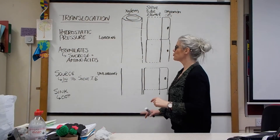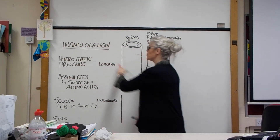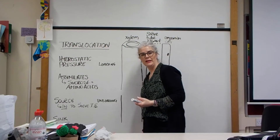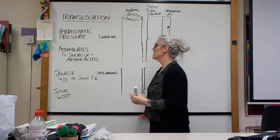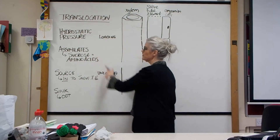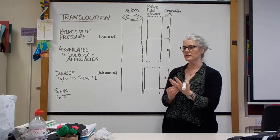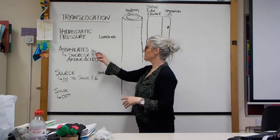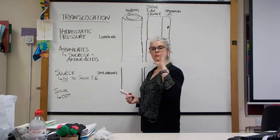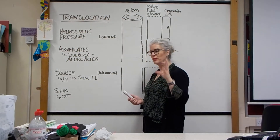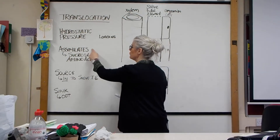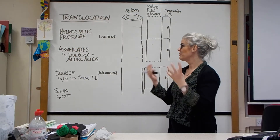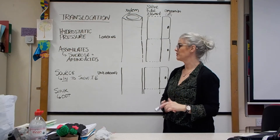Today we're going to have a look at translocation, which is the movement of what's called assimilates through the plant through phloem tissue. Assimilates can be sucrose — the plant makes glucose, but glucose is more reactive than sucrose so it quickly converts it into sucrose. Assimilates might also be amino acids. Today we're going to concentrate on sucrose, but it could equally be amino acids.